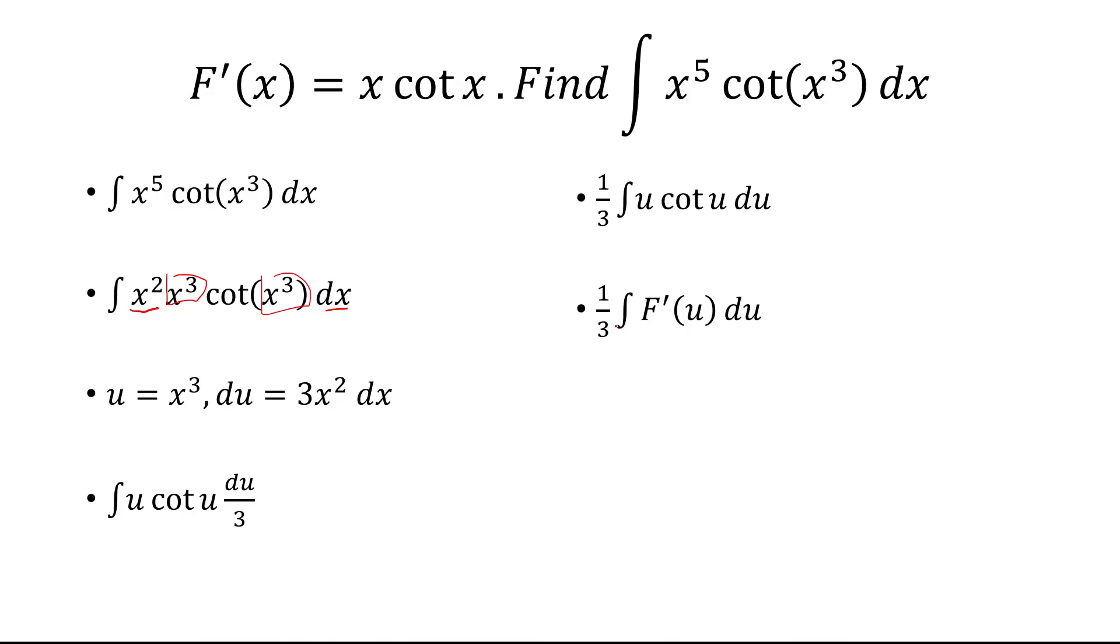So we have 1 third times the integral f prime of u du. The antiderivative of f prime of u is just f of u, and then we add a constant C. u we said was x cubed. So our final answer is 1 third times f of x cubed plus C.